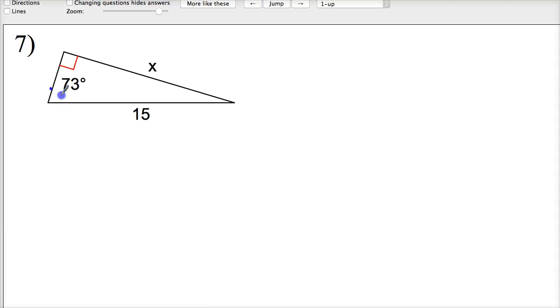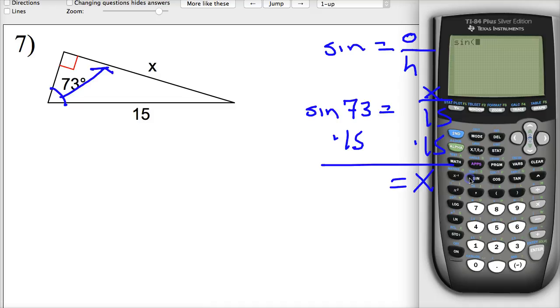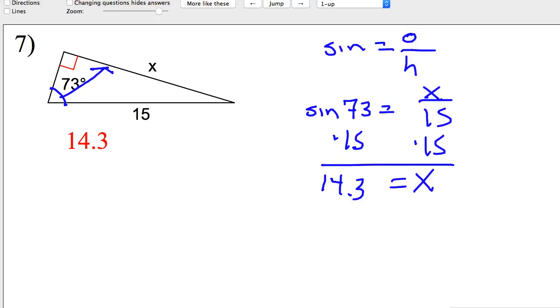Here's one. This is an opposite over hypotenuse question. Sat on Henry's. Opposite over hypotenuse. So, the sine of 73 is equal to x over 15. This one's a pretty simple one. Times 15 gets rid of divide by 15. x is equal to 14.4, 14.3.